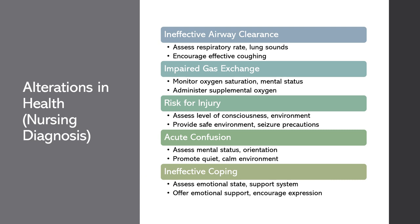Now let's look at risk for injury. Clinical manifestations might vary depending on the nature of the poisoning, but could include seizures, altered mental status, or respiratory distress. We would assess the patient's level of consciousness, vital signs, and potential sources of injury within their environment. To help patients, we might provide a safe environment by removing hazards and instituting seizure precautions if necessary. The rationale is to minimize the risk of injury and ensure patient safety. We would teach patients and families about poison-proofing their homes.